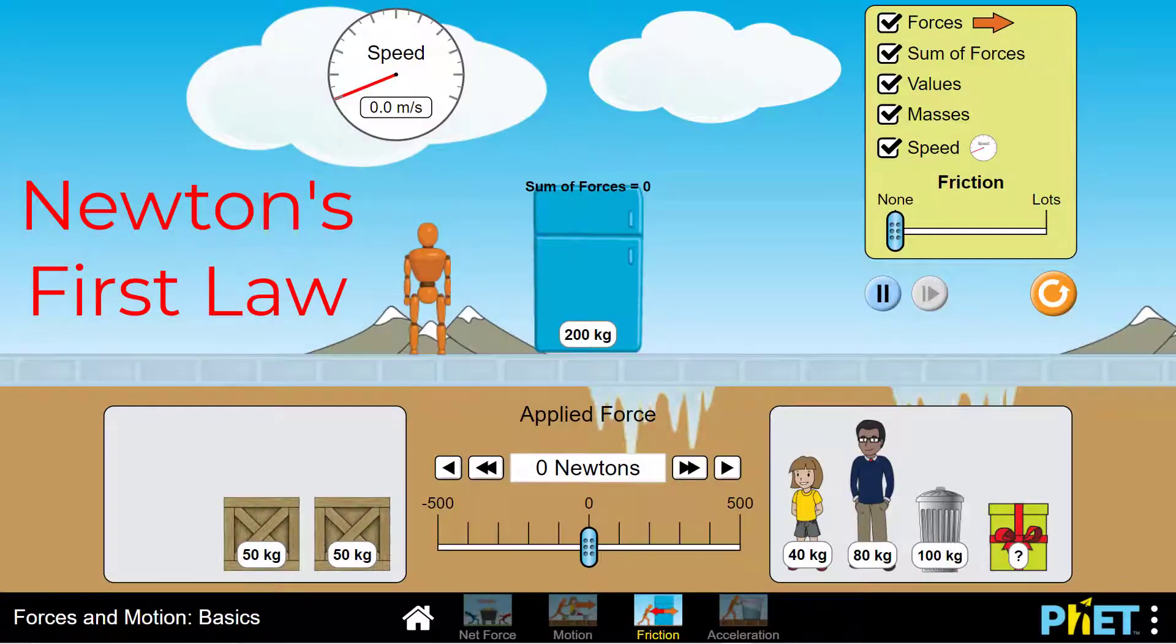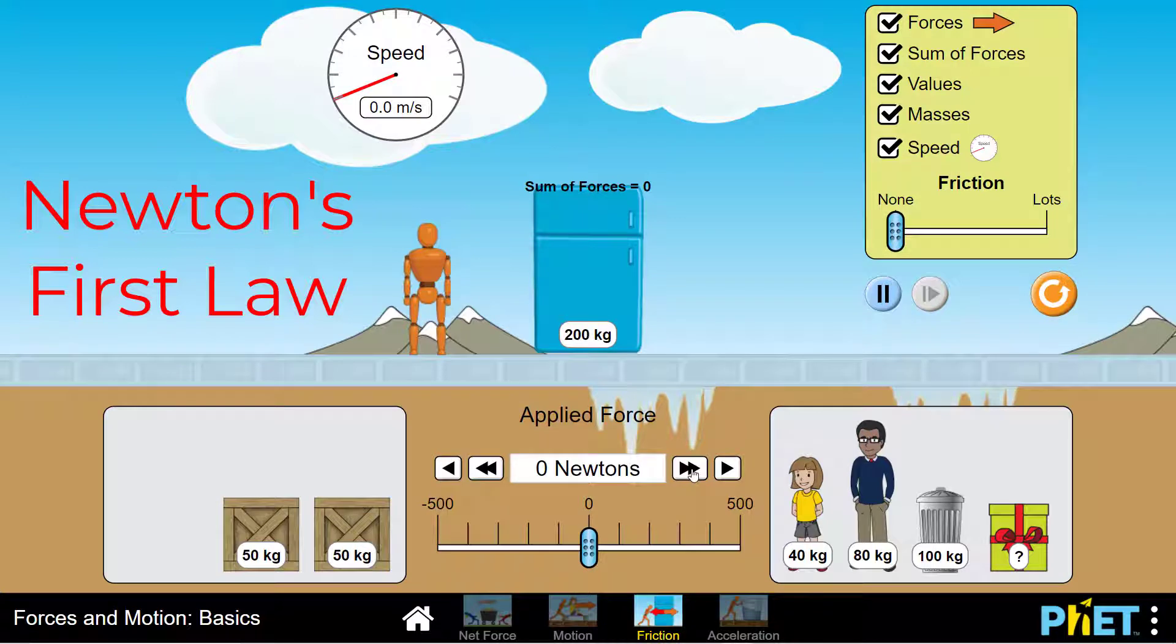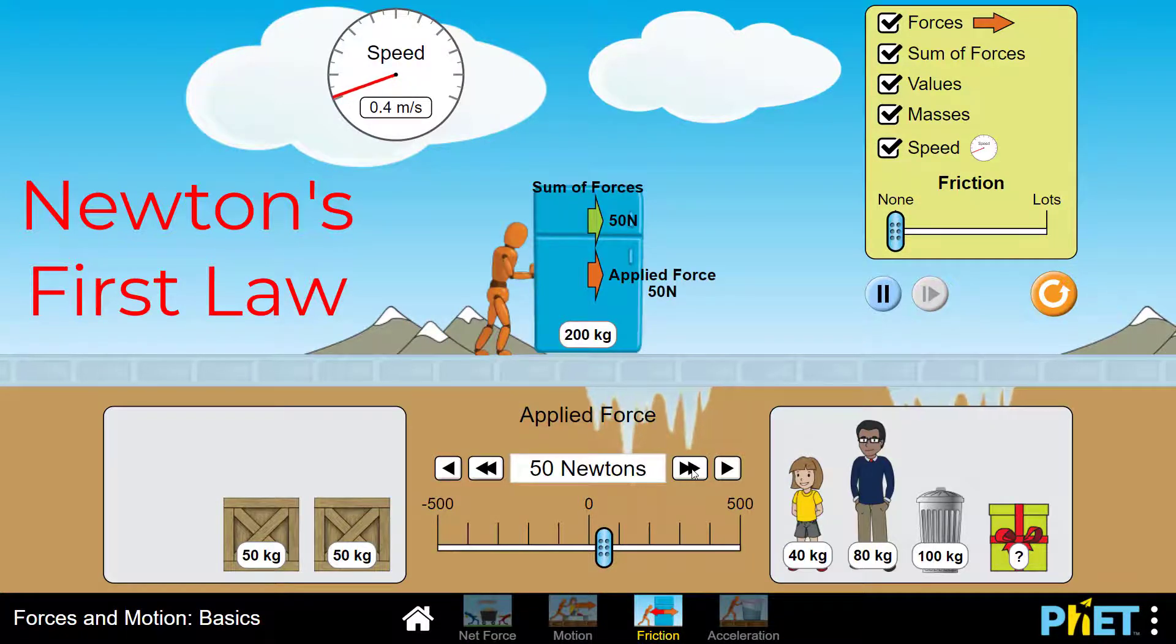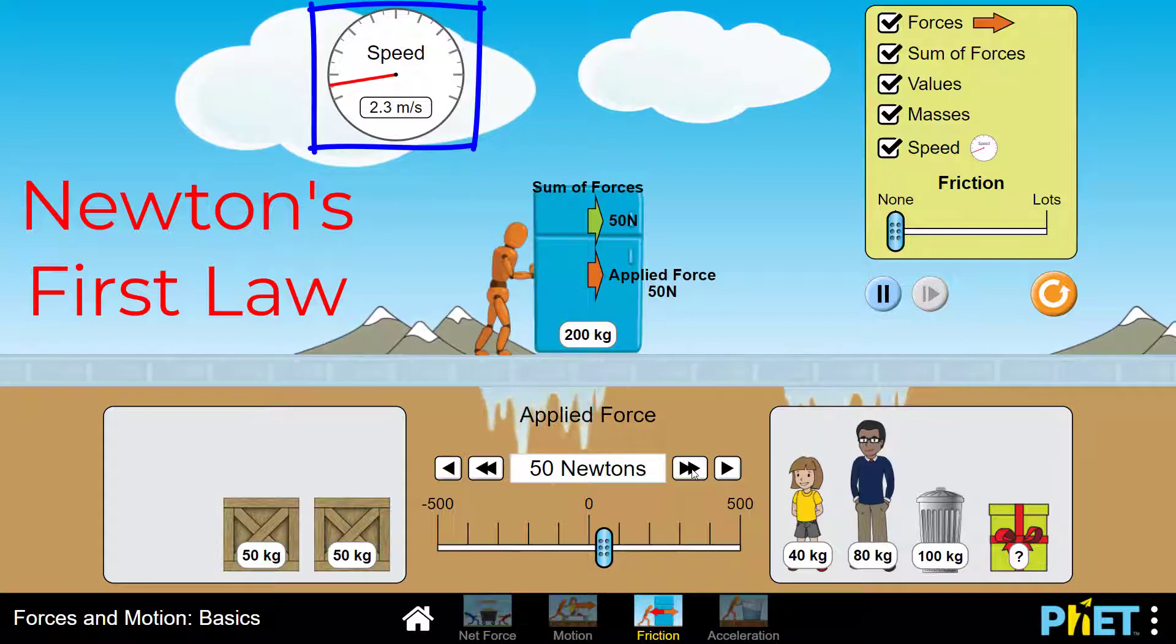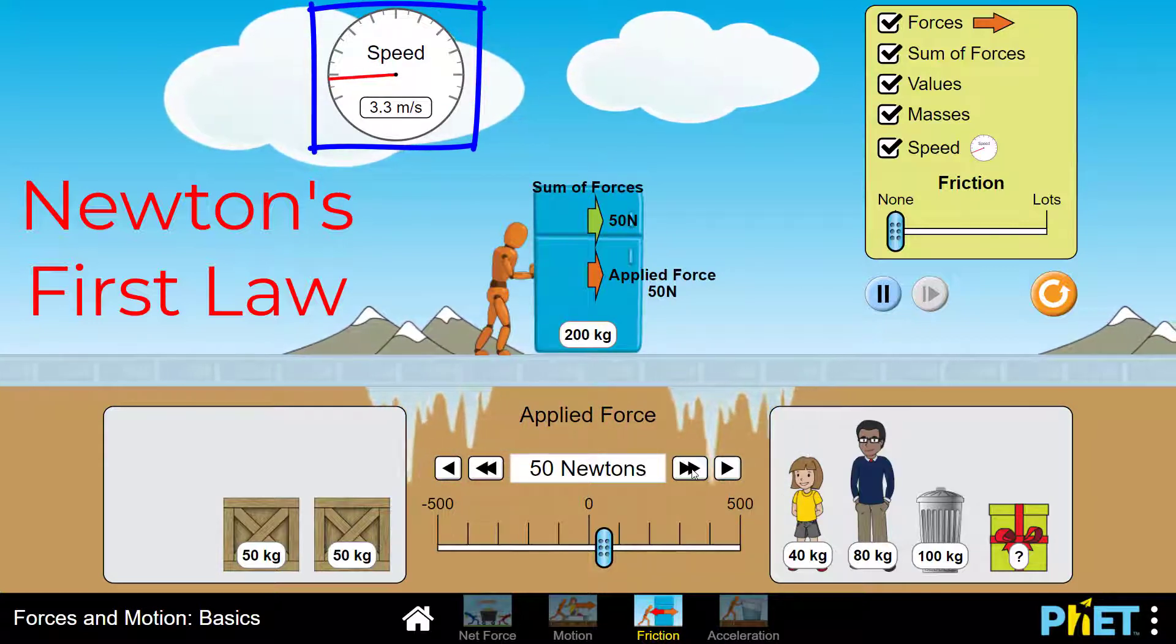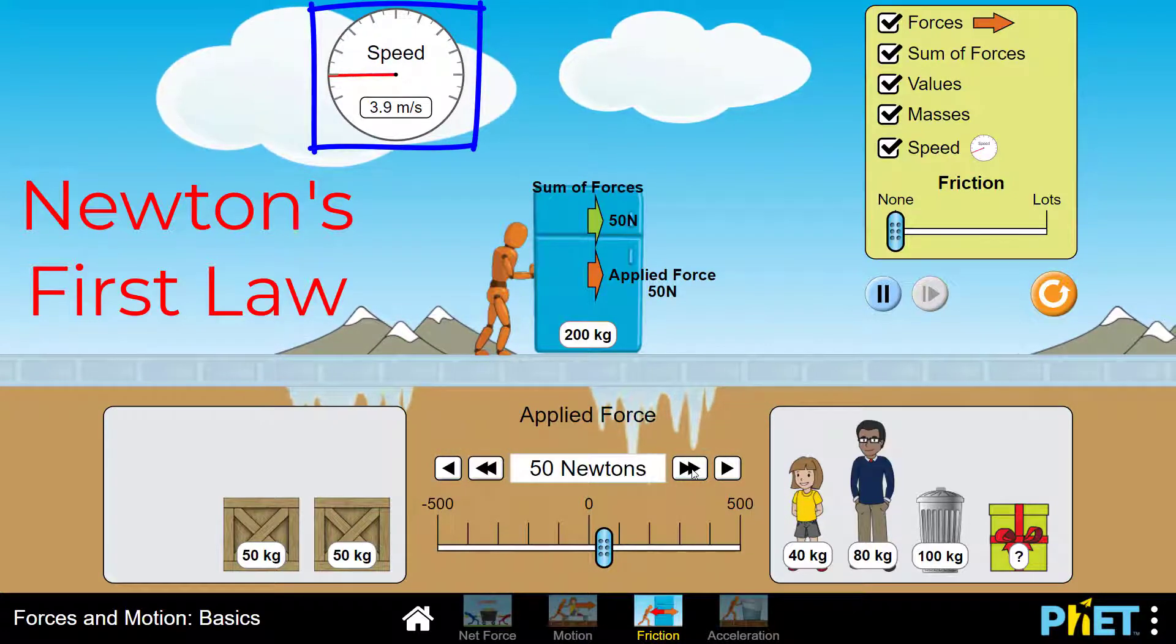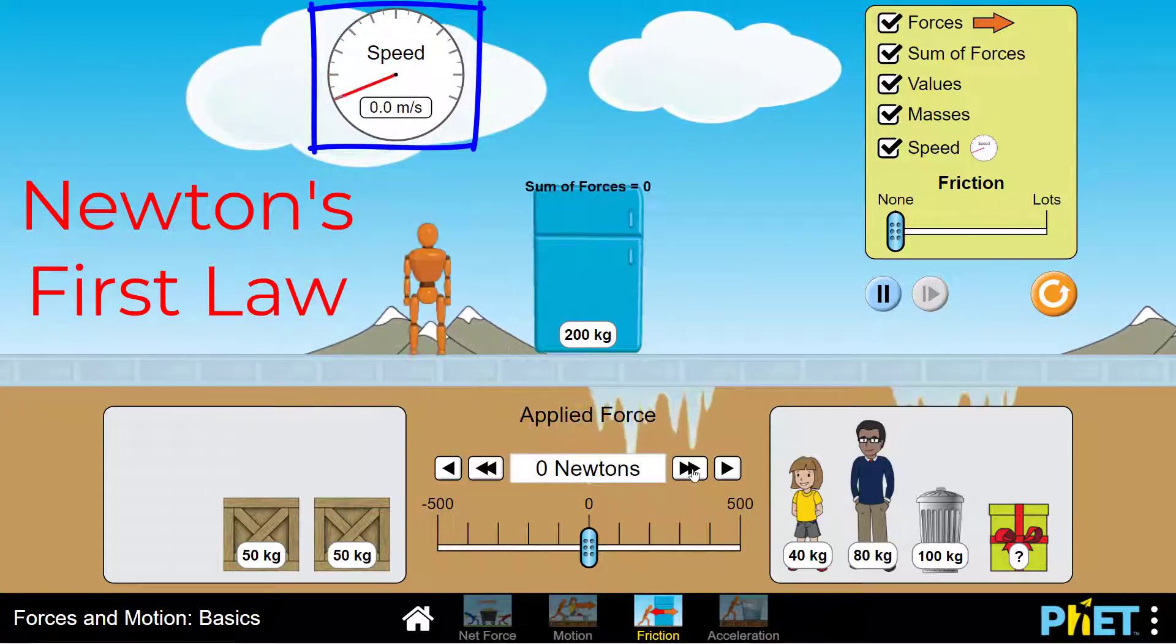A 200-kilogram refrigerator is sitting on a sheet of ice. Newton's first law says if there are no net forces acting on this refrigerator, it will stay at rest. Watch what happens when I apply a 50-Newton force to this refrigerator. You can see it starts to move. The speed is increasing. If the speed is increasing, that means there's an acceleration. So I can say if there's a net force applied to an object, it causes an acceleration, which causes a change in speed.